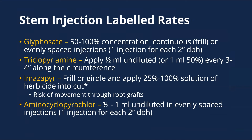Reading the labels for stem injection rates: glyphosate at 50–100% concentration in a continuous frill or evenly spaced injection — one hack or drill for each two inches of plant diameter. Triclopyr amine at half a milliliter of undiluted herbicide for every three to four inches of circumference. Imazapyr requires a full girdle. Aminocyclopyrichlor at half to one milliliter in one injection for each two inches. Rates differ, so read the label for the specific herbicide you have.